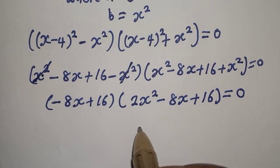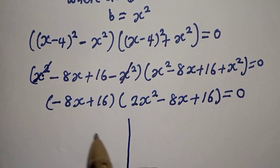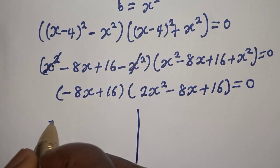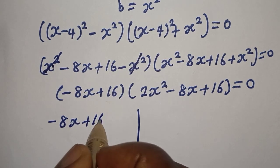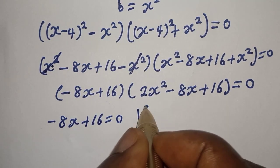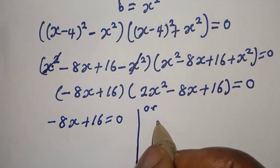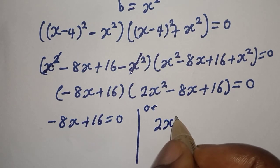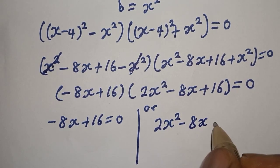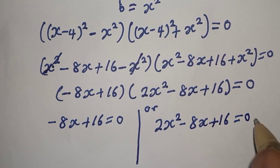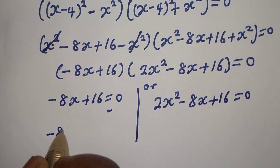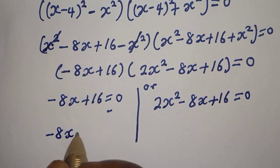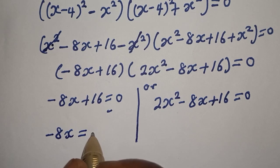Now there are two cases here. The first case is: minus 8S plus 16 is equal to 0. Or the second case: 2S squared minus 8S plus 16 is equal to 0.